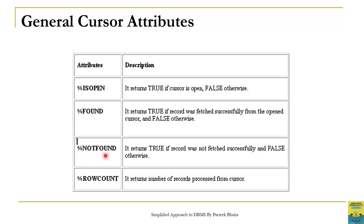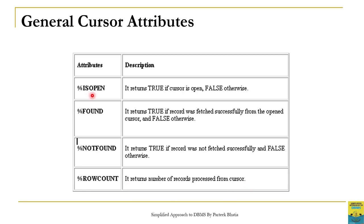%NotFound also returns a boolean value and its working is just opposite to the %Found attribute. It returns true if a record was not fetched successfully, and false otherwise. %RowCount is a very important cursor attribute and it is used to return the number of rows processed from the cursor.